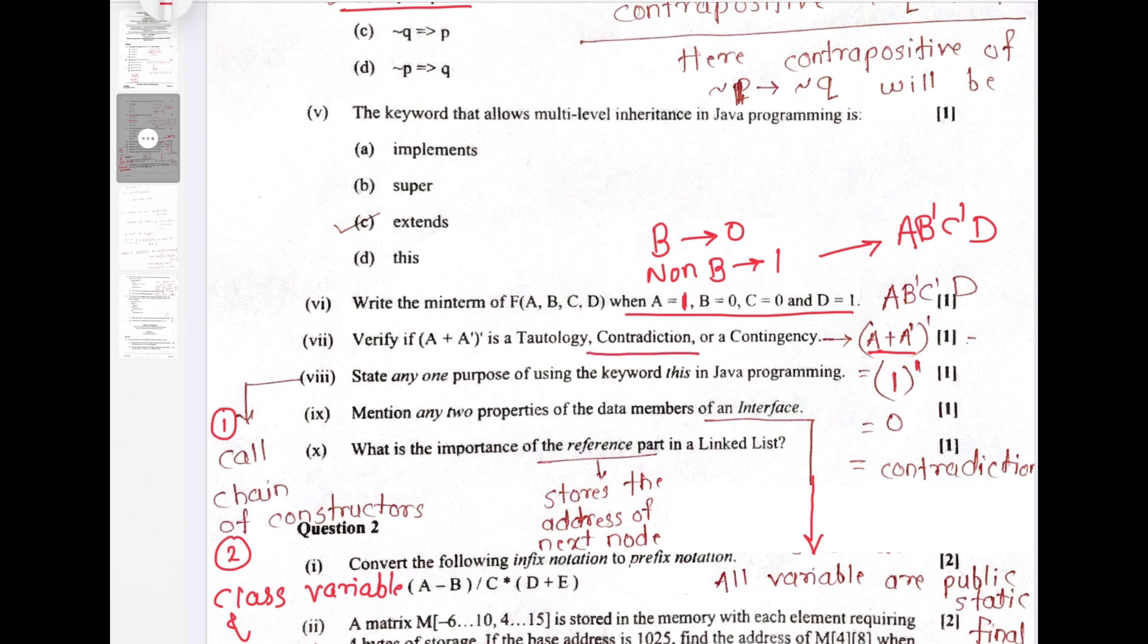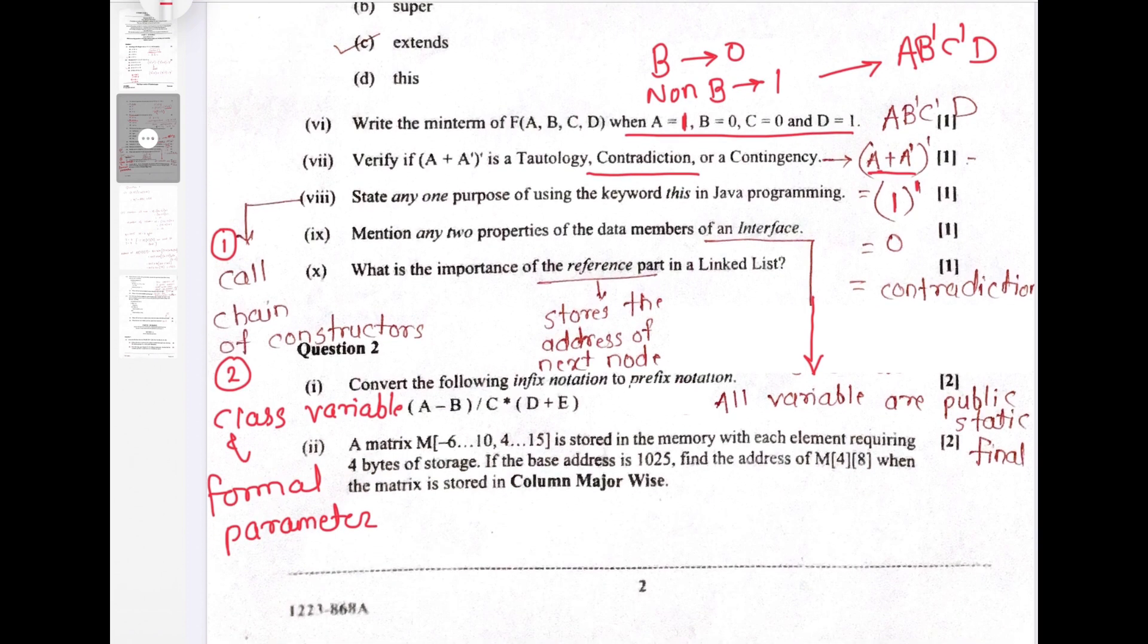State any one purpose of using this keyword. There are two usage of this keyword. First is to call the chain of constructor. If we want to call multiple constructors, then we use this keyword. And second is to distinguish between the class variable and formal parameters if they are same name. If they are having same name, then to distinguish between class variable and formal parameter, we use this keyword.